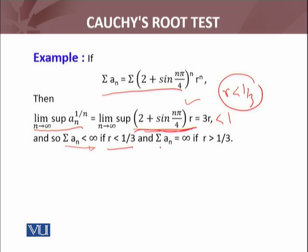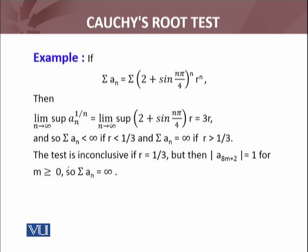And the series is divergent if this limit is greater than 1. This limit, which we calculated as 3r, will be greater than 1 whenever r is greater than 1 by 3. So the series will diverge if r is greater than 1 by 3. If this limit equals 1, then the test is inconclusive. The test is inconclusive if r equals 1 by 3.